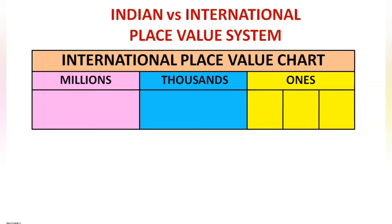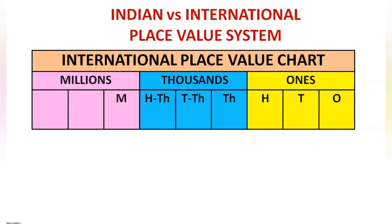In this system, each period is divided into three place values: the ones period into ones, tens, and hundreds; the thousands period into thousands, ten-thousands, and hundred-thousands; and the millions period into millions, ten-millions, and hundred-millions.